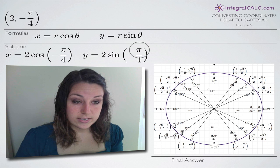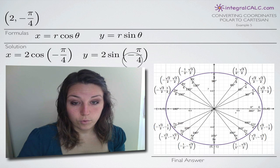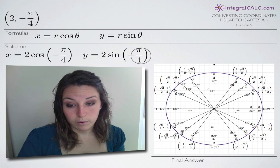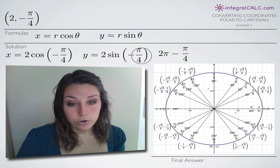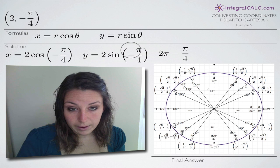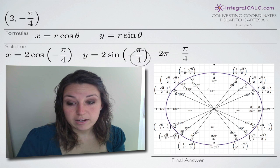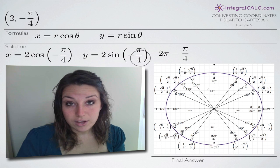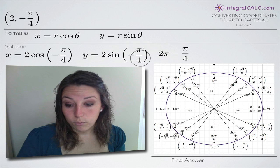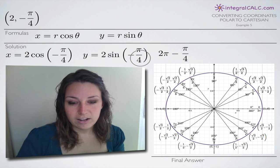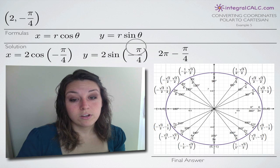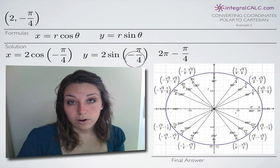To evaluate cosine of negative pi over four and sine of negative pi over four, we're going to need to use our unit circle. You could approach this two ways: you could take the angle negative pi over four and work backwards from zero on the unit circle, or you could convert negative pi over four to a positive angle.